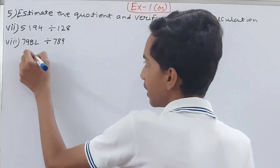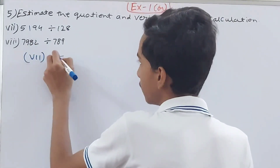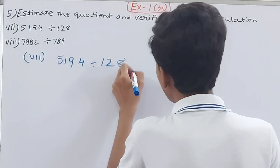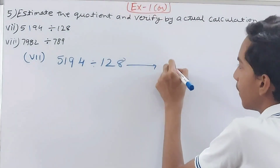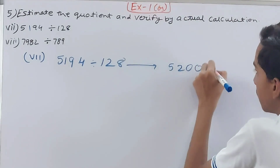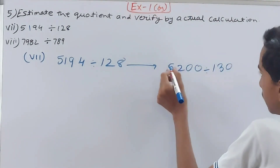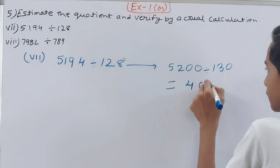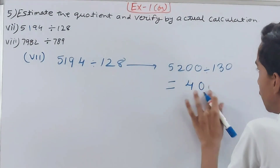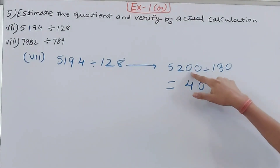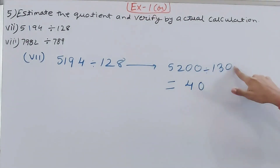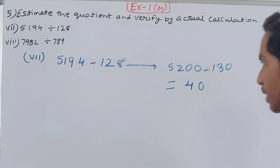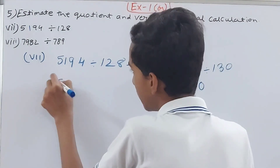Seventh part: 5194 ÷ 128. Estimate as 5200 ÷ 130. For the estimated: 13 into 52 is 4 times, and there are two zeros in 5200 and one zero in 130, so two minus one gives one zero. Estimated quotient is 40.